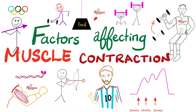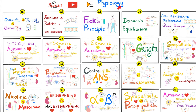It's Medicosis Perfectionitis, where medicine makes perfect sense. We continue our physiology playlist. In the previous video, we talked about isotonic-isometric contractions and the difference between fast twitch and slow twitch muscle fibers. Today, we'll talk about the factors that affect muscle contractions, such as the stimulus, length-tension relationship, and load-velocity relationship. This is video number 55 in this magnificent playlist.